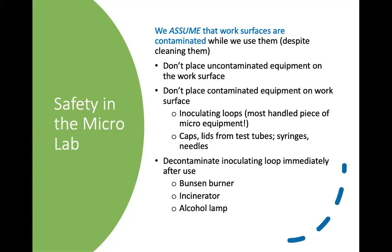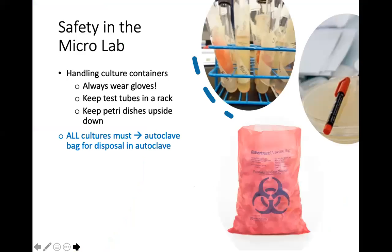Always assume that a surface is contaminated while you're using it, even after you disinfect it — treat it as though it's contaminated. If you are holding something sterile and you don't want it to get contaminated, don't put it down. Keep it in your hands. Your inoculating loops, for example — if you've just sterilized your loop in the incinerator, don't put it down on the desktop unless you're planning to sterilize it again before use. Keep caps, lids, syringes, needles that are sterile in your hand as you're preparing to use them. The tool we use most often in a microbiology lab is that inoculating loop — that wire with the loop on the end and the metal handle. We use this to move microbes around, so it's a constantly potentially contaminated item, and we're constantly sterilizing and re-sterilizing it — either with a Bunsen burner or with an incinerator.